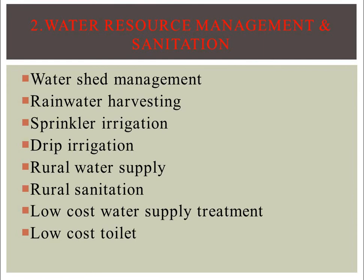Our today's topic is Chapter Number 2: Water Resource Management and Sanitation. The content of this chapter includes Watershed Management, Rainwater Harvesting, Sprinkler Irrigation, Drip Irrigation, Rural Water Supply, Rural Sanitation, Low Cost Water Supply Treatment, and Low Cost Toilet.